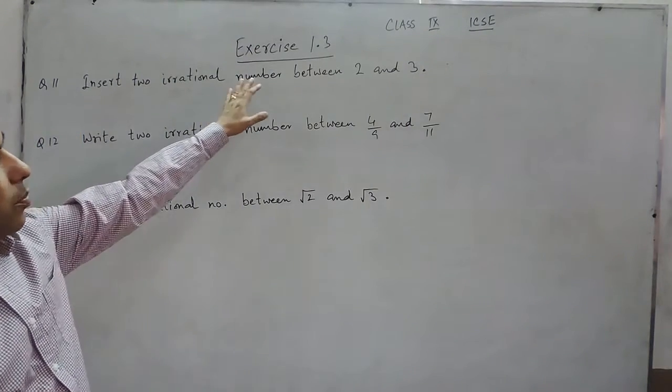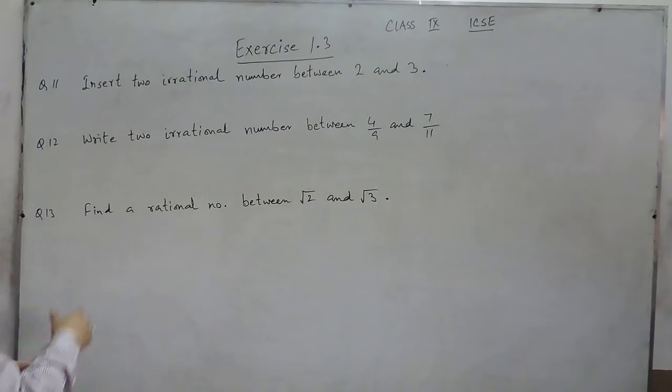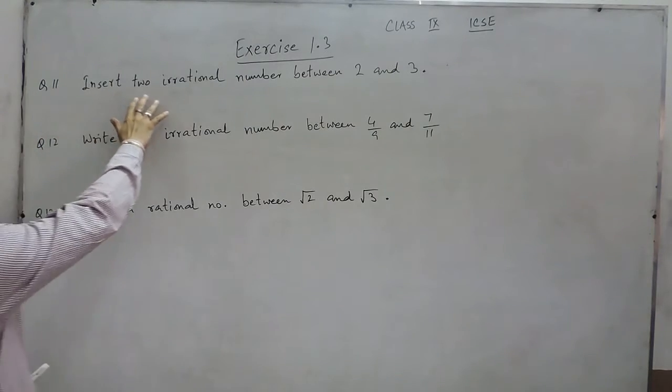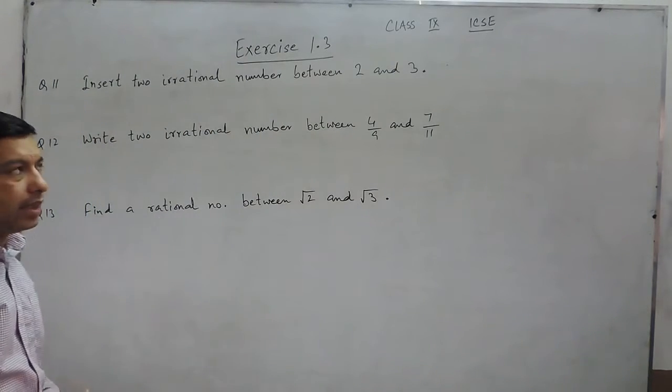Hello everyone, exercise 1.3, class 9, question number 11. Insert 2 irrational numbers between 2 and 3.